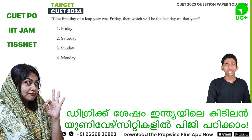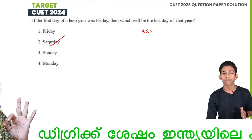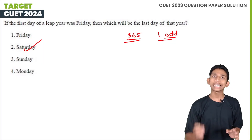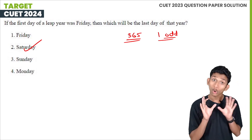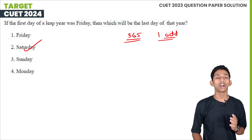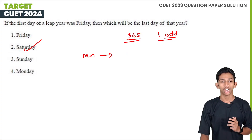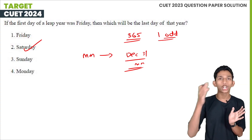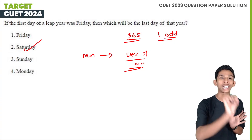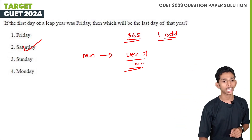Next question: if the first day of a leap year was Friday, which will be the last day of that year? A leap year has 2 odd days. Starting from Friday, adding 2 odd days means the last day will be Saturday.